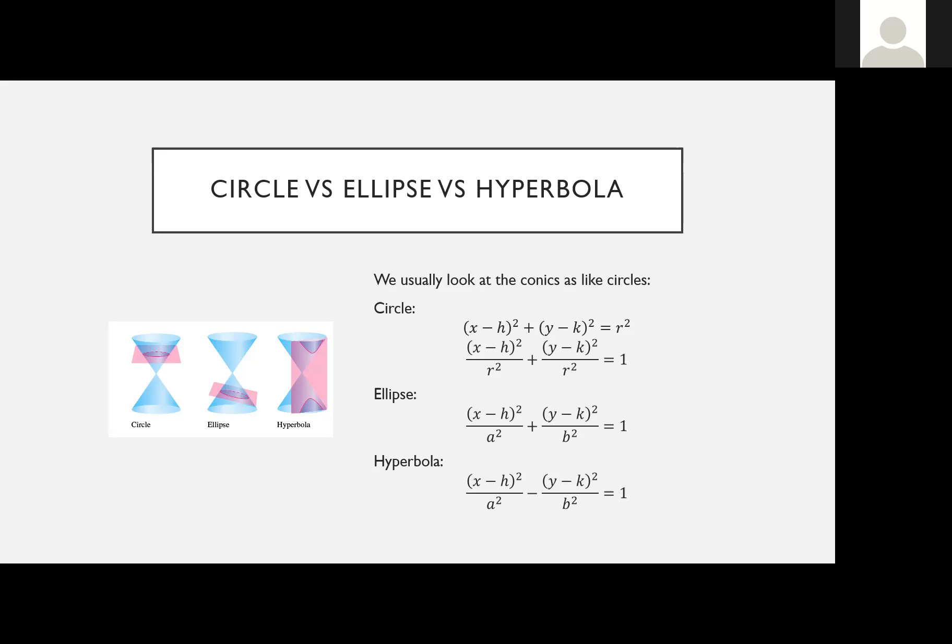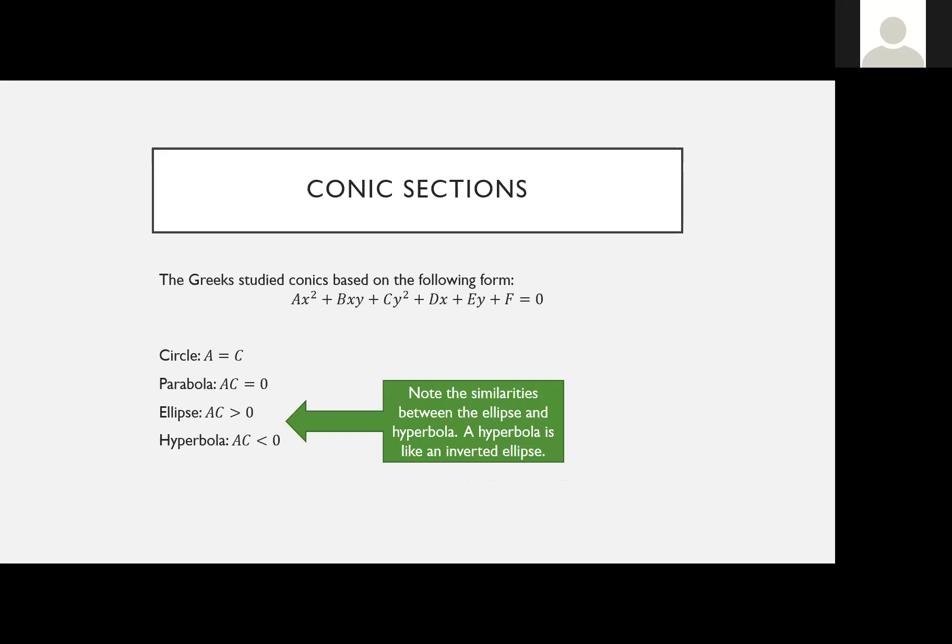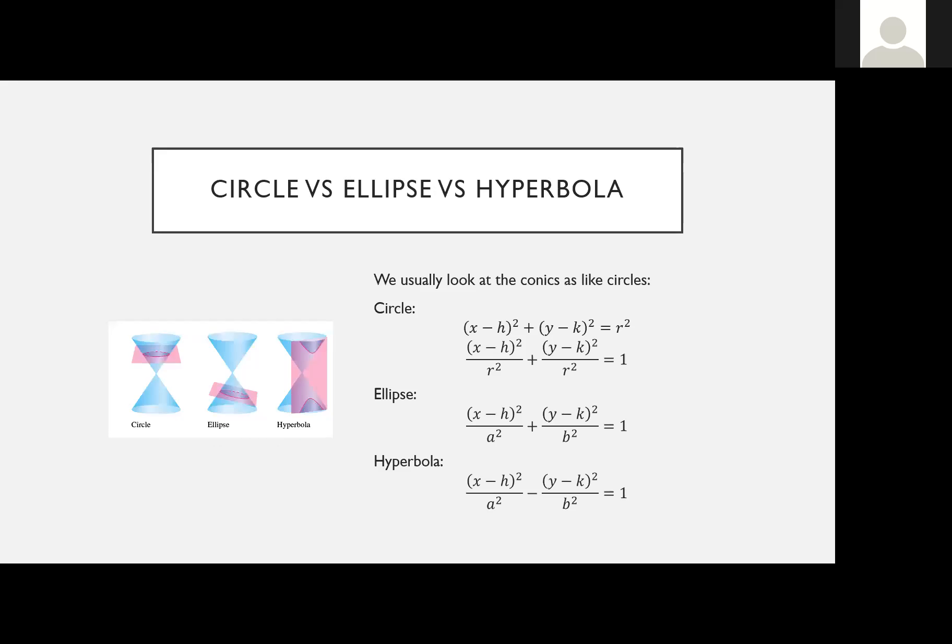The only difference between a circle and an ellipse is that for the ellipse, the denominators don't have to be the same — you get a² and b². Compare this to the hyperbola: it's basically the same equation as the ellipse, just with a minus sign instead of a plus. The ellipse has ac > 0, the hyperbola has ac < 0, and you can see that reflected as a plus versus a minus in the equations.